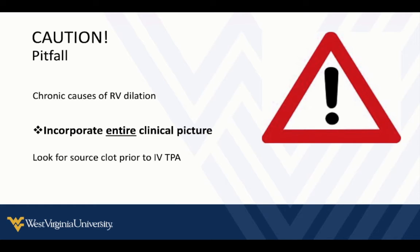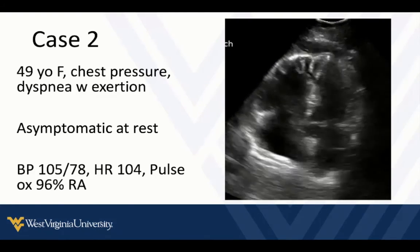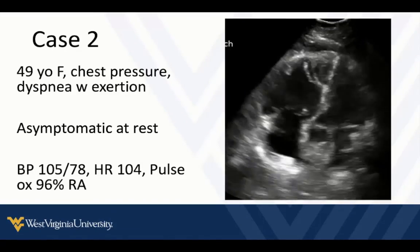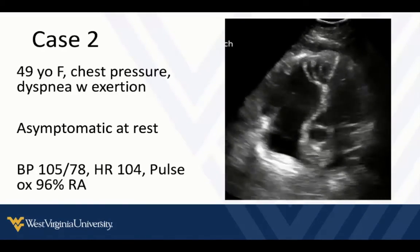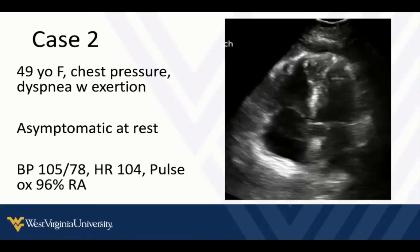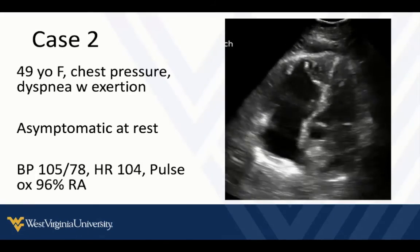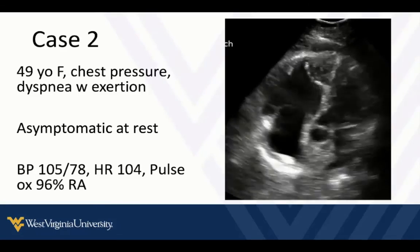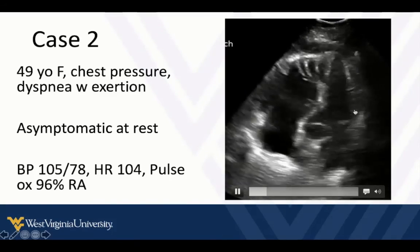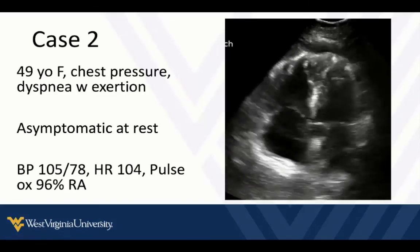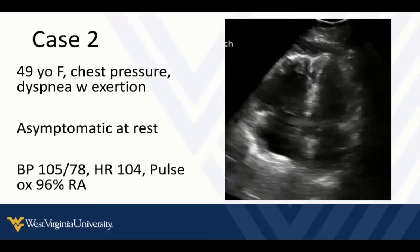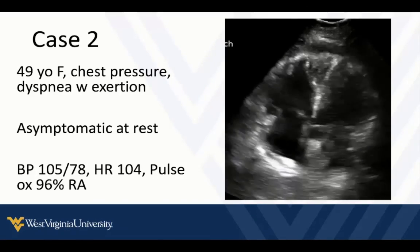If we see what we think is acute RV dilation and a source clot in the legs or arms, that can lend credence to a decision to give TPA empirically. This brings us back to the case of our 49-year-old female with chest pressure, dyspnea on exertion, and a mildly elevated troponin — clinically looking like a non-STEMI acute coronary syndrome. She looked well at rest with no real EKG findings. When we assessed LV function, we recognized a dilated right ventricle, which led to CT for pulmonary embolism, making the correct diagnosis and avoiding the diagnostic error of acute coronary syndrome. She was actually having a PE with markers of right ventricular strain.